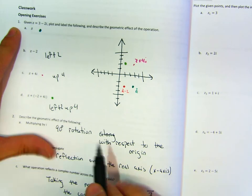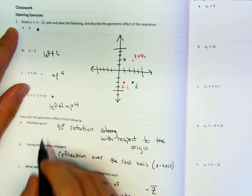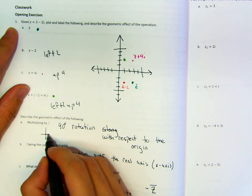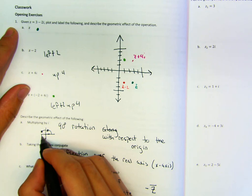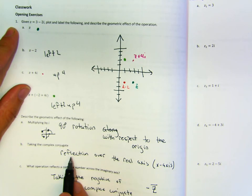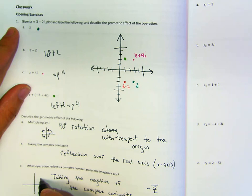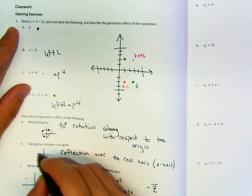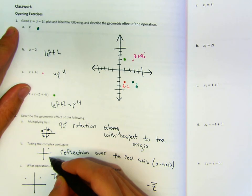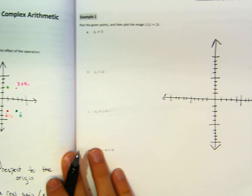Going through these concepts: what happens when we multiply by i? It was that 90-degree rotation with respect to the origin. Taking the complex conjugate is a reflection over the real axis, and taking the negative of the complex conjugate reflects it over the y-axis. For part b, you went from here to here — when you do the negative complex conjugate you're reflecting over the y-axis.